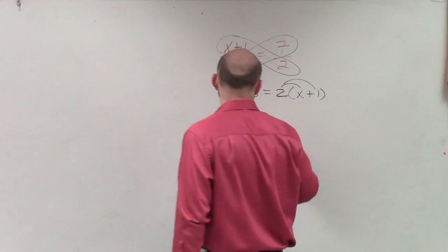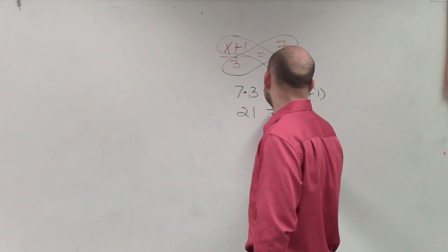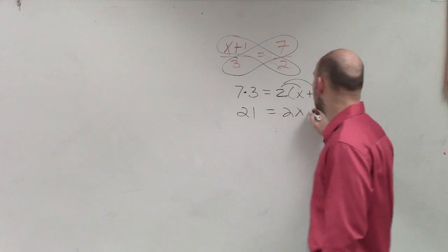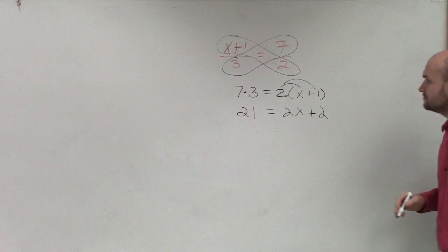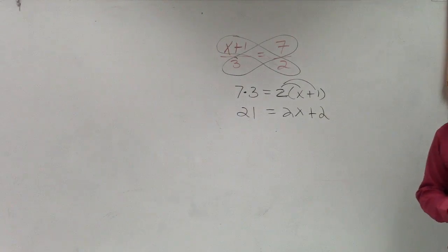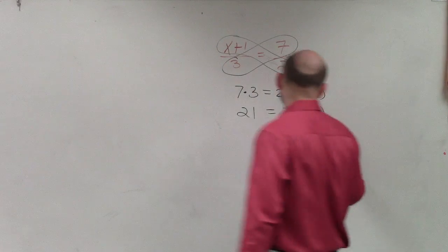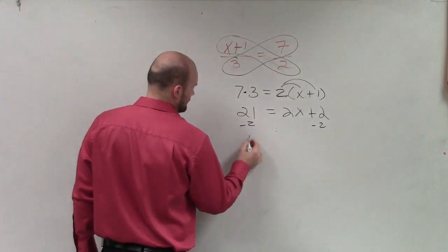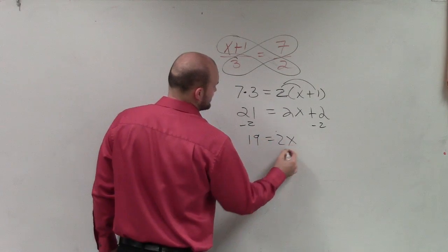So therefore, 7 times 3 is 21 equals 2 times x is 2x plus 2. Hmm, what did you do, AJ? Then I subtract 2, and I have 19 equals 2x.